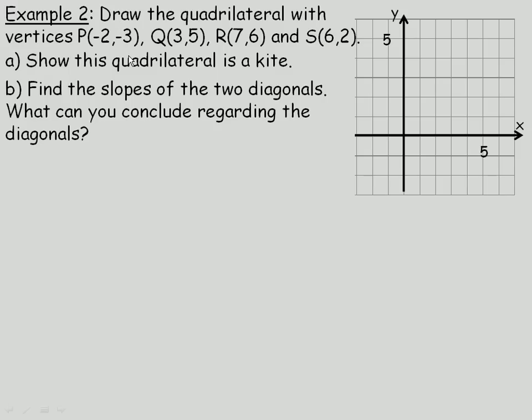We are asked to draw the quadrilateral with these four vertices: P, Q, R and S. So P is (-2,-3). Q is (3,5). R is (7,6). And S is (6,2). And so we will join the four sides in order. P to Q to R to S and back to P. And that is our quadrilateral.